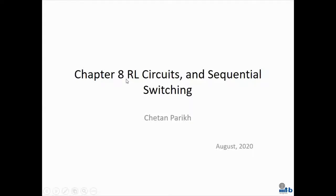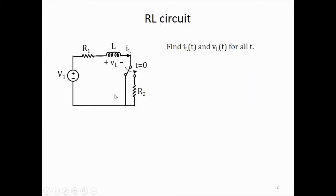We continue with chapter 8. This lecture will talk about RL circuits and sequential switching. We look at a circuit with a single inductor — a voltage source, resistor, a single inductor, and a switch. For T less than 0, the switch is connected through a wire, and at T equal to 0, the switch is flipped to connect to resistor R2. The question is: find the current and voltage in the inductor for all time.